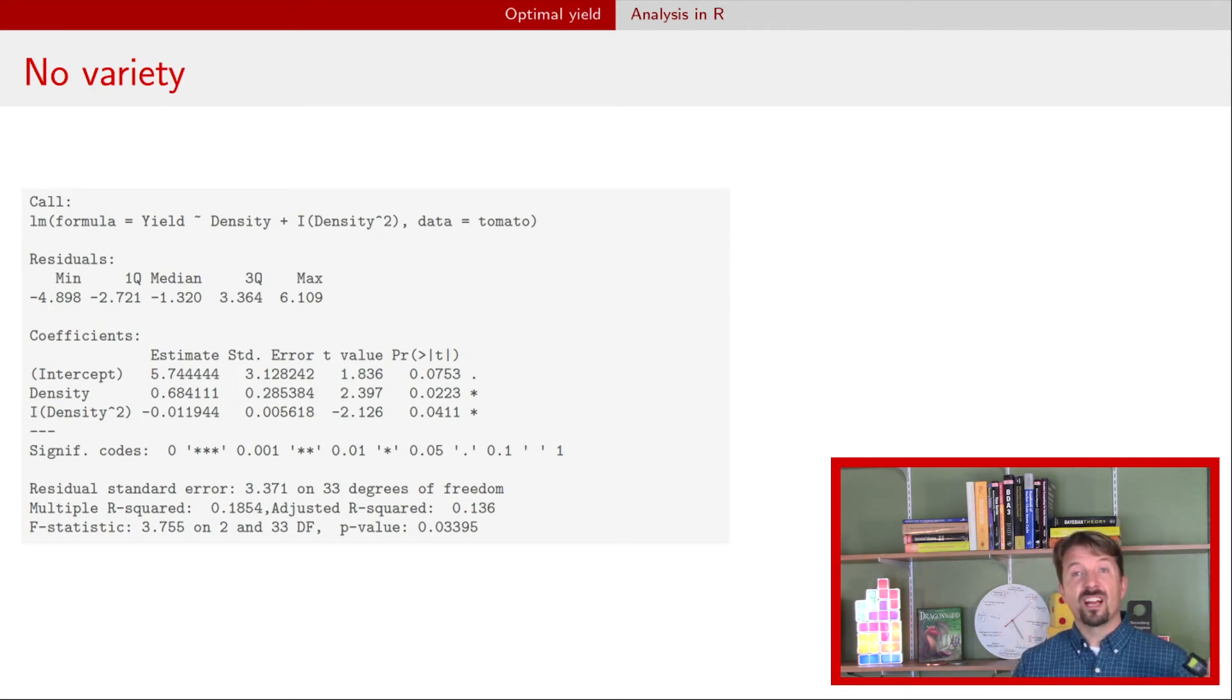Okay so let's just talk about those three models that we had. The first model didn't have variety at all so we just have here a curve for density. You'll notice that the coefficient for the quadratic term for density is in fact negative so we will have a maximum for this model and we could calculate it from that value for β₁.